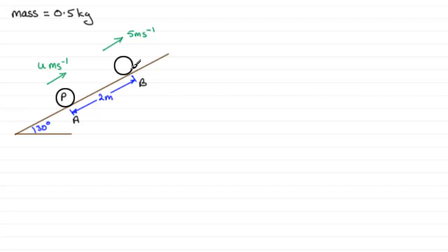As the particle goes from A to B, there's going to be a loss in kinetic energy. It's going to slow down and at the same time gain gravitational potential energy. So the loss in kinetic energy equals the gain in gravitational potential energy.